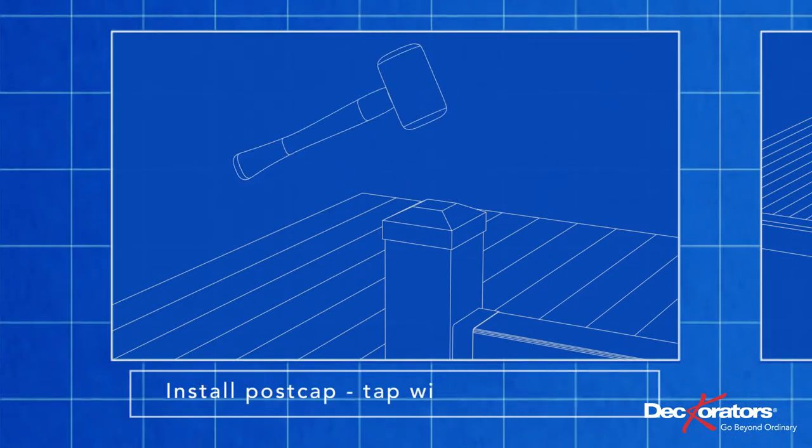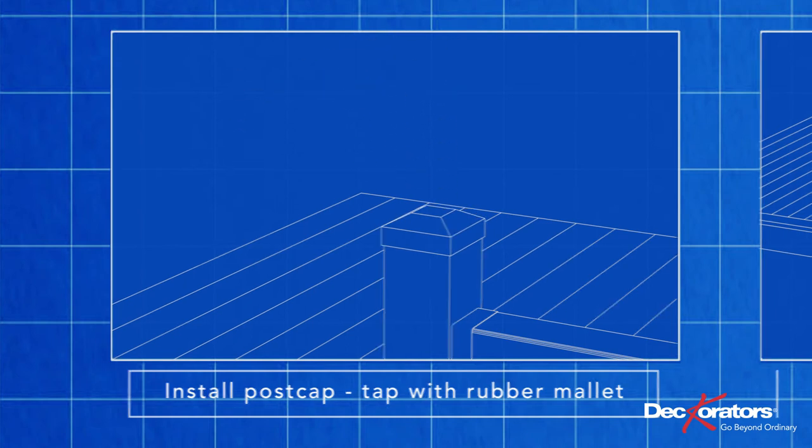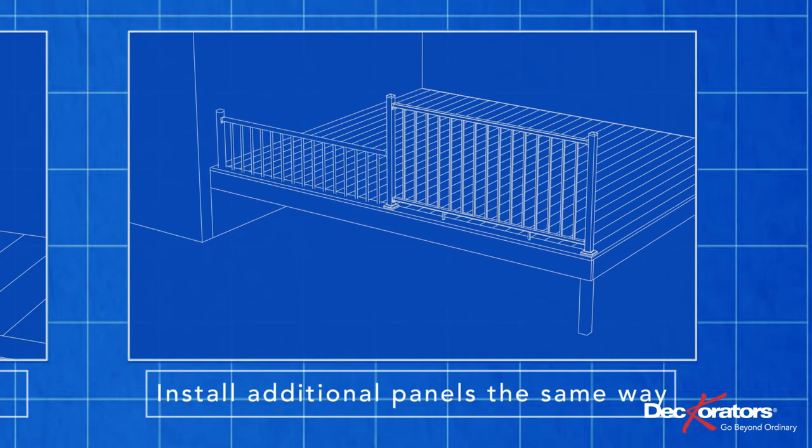Finish by tapping the post cap onto the post with a rubber mallet. Add your other railing sections the same way.